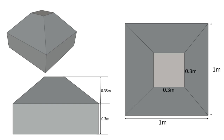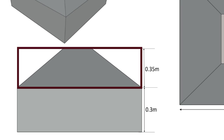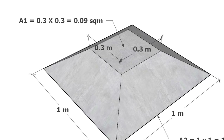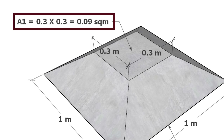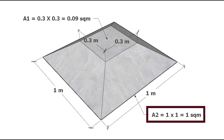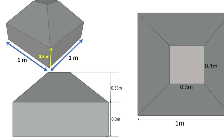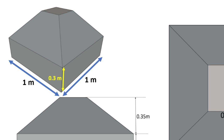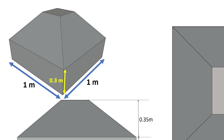We have a trapezoidal footing with the following data. Height of the trapezoidal portion is given as 0.35 meters. Smaller top area A1 is given as 0.3 by 0.3, equals 0.09 square meters. Larger bottom area A2 is given as 1 by 1, equals 1 square meter. Rectangular cuboid thickness is given as 0.3 meters, with length and width of footing as 1 meter each.